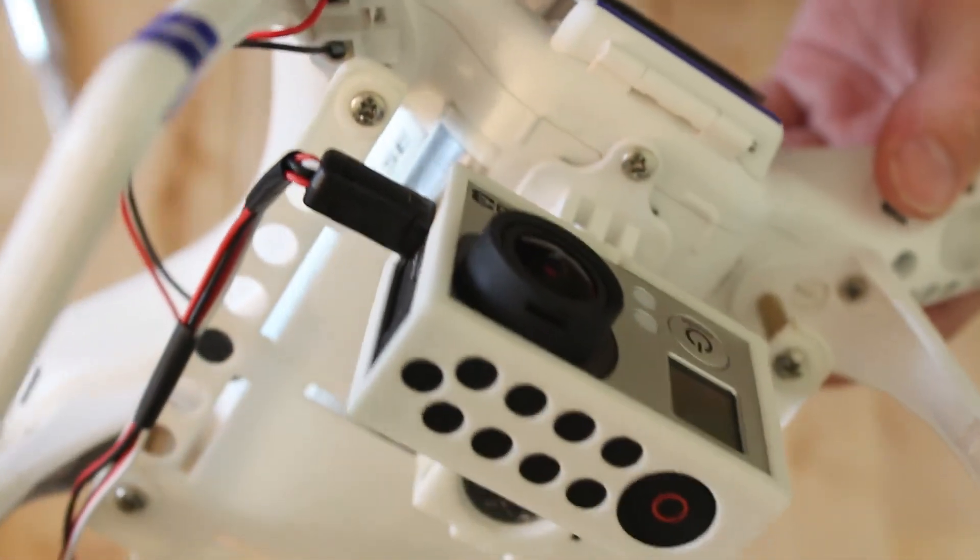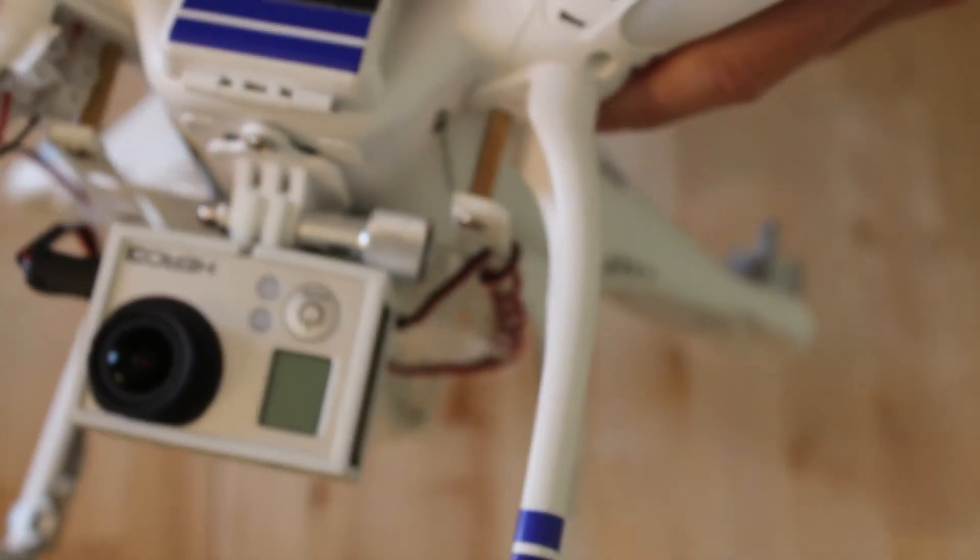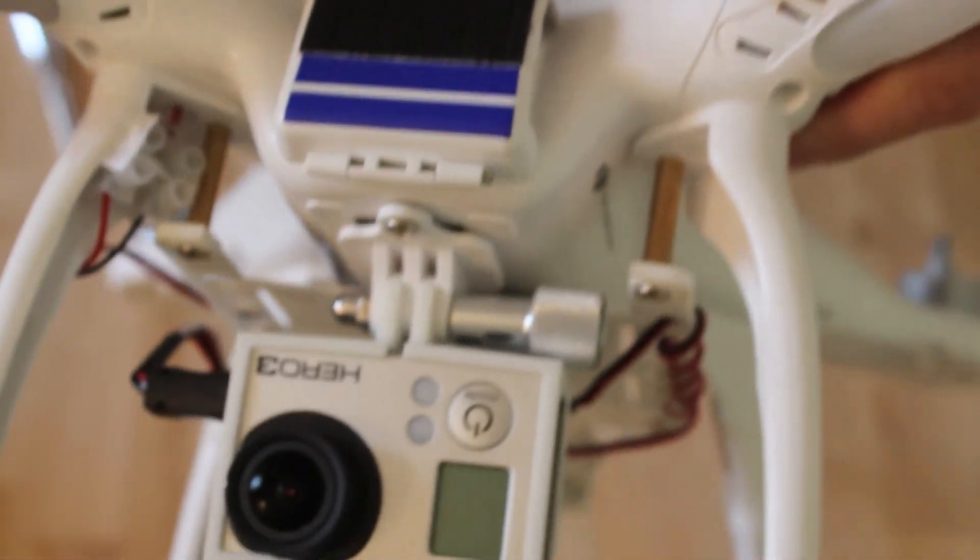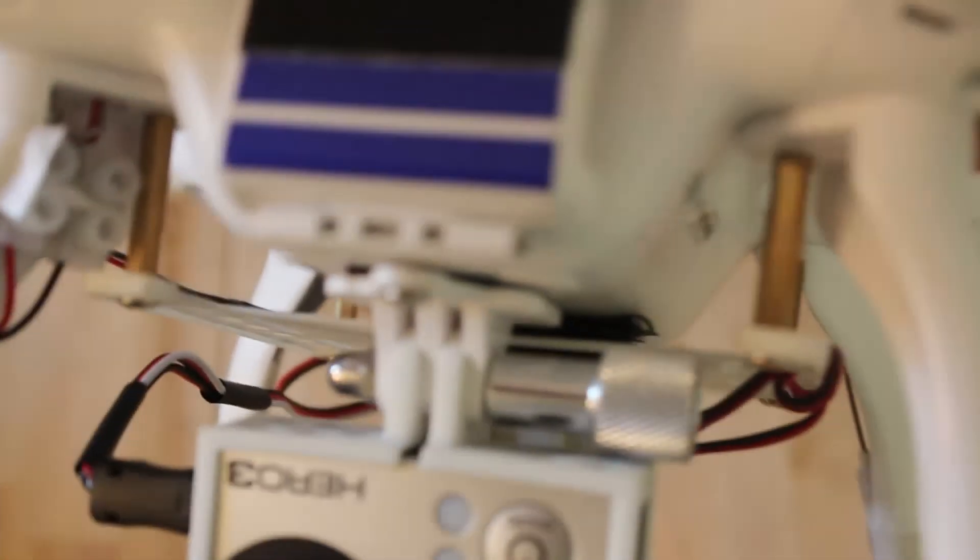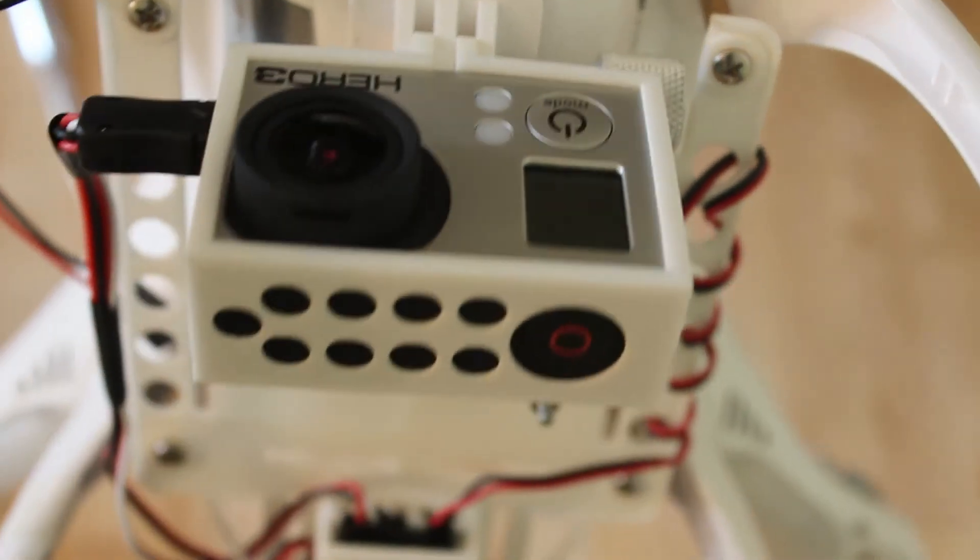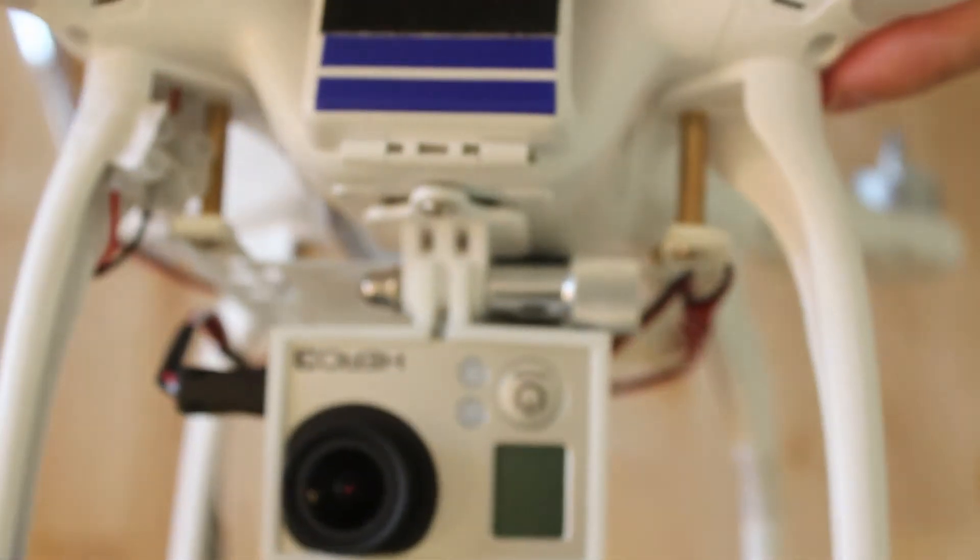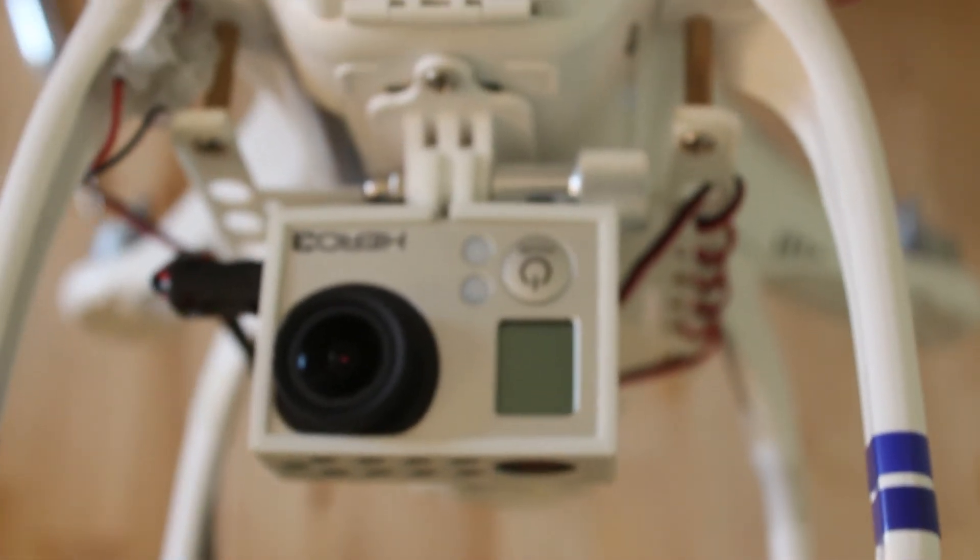Color-wise, the white nylon really suits the Phantom with the white body, held nice and secure by those brass spacers. Camera's going nowhere, TX is going nowhere, nice neat cabling. And don't forget to check out my other videos in regards to the dual battery cage, which will also fit on this setup.